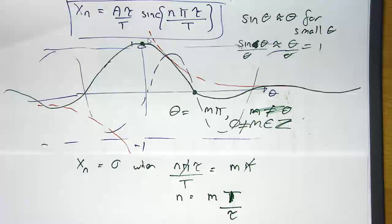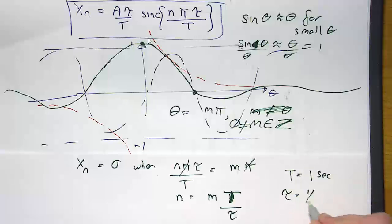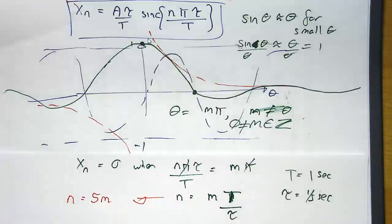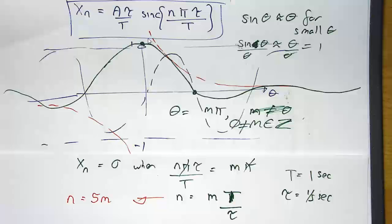I'll put some numbers in because at this point it's a bit abstract. The example I've given in the handouts has T equal to 1 second and tau equal to a fifth of a second. So capital T over tau gives you n equal to 5 times m, where m is an integer not equal to 0. So the times that you're going to cross the axis is when n is equal to 5 and minus 5, 10 and minus 10, 15 and minus 15, and so on.